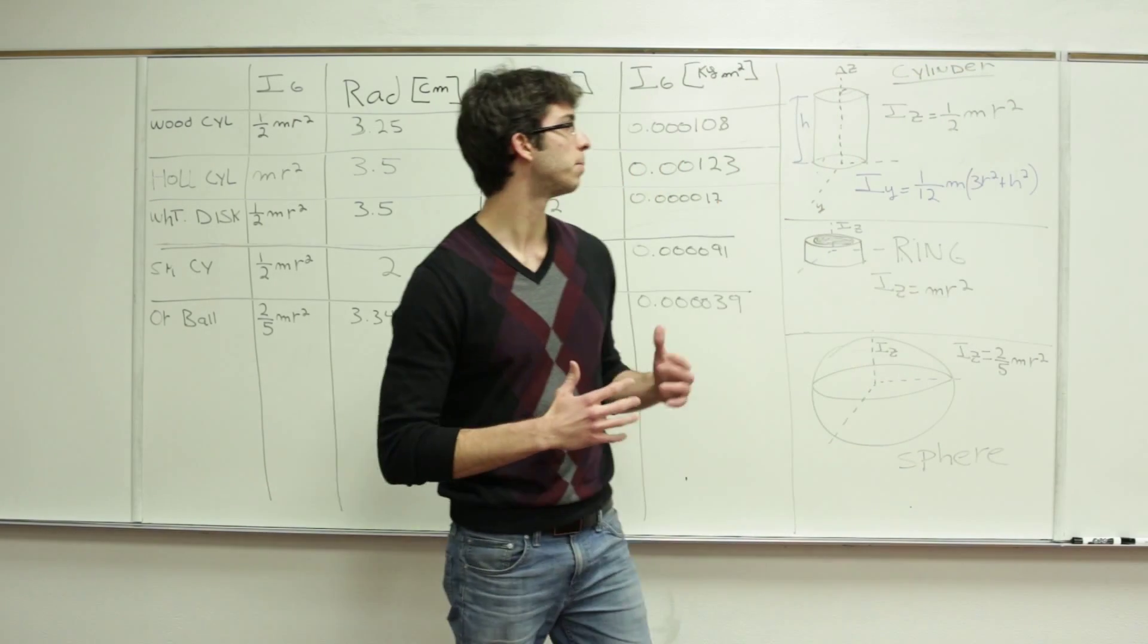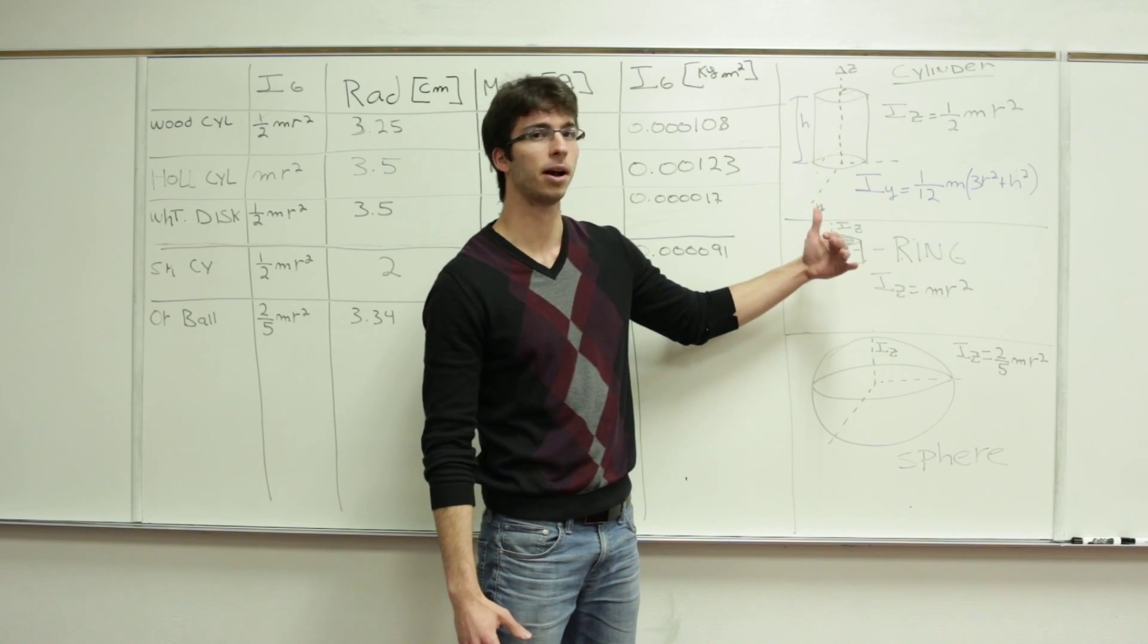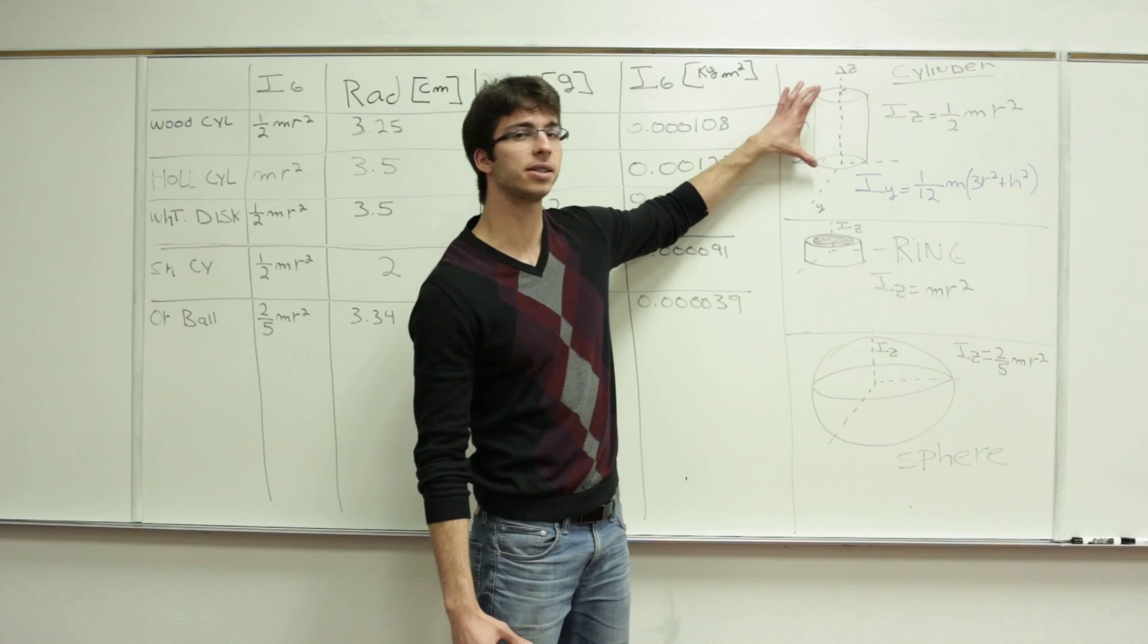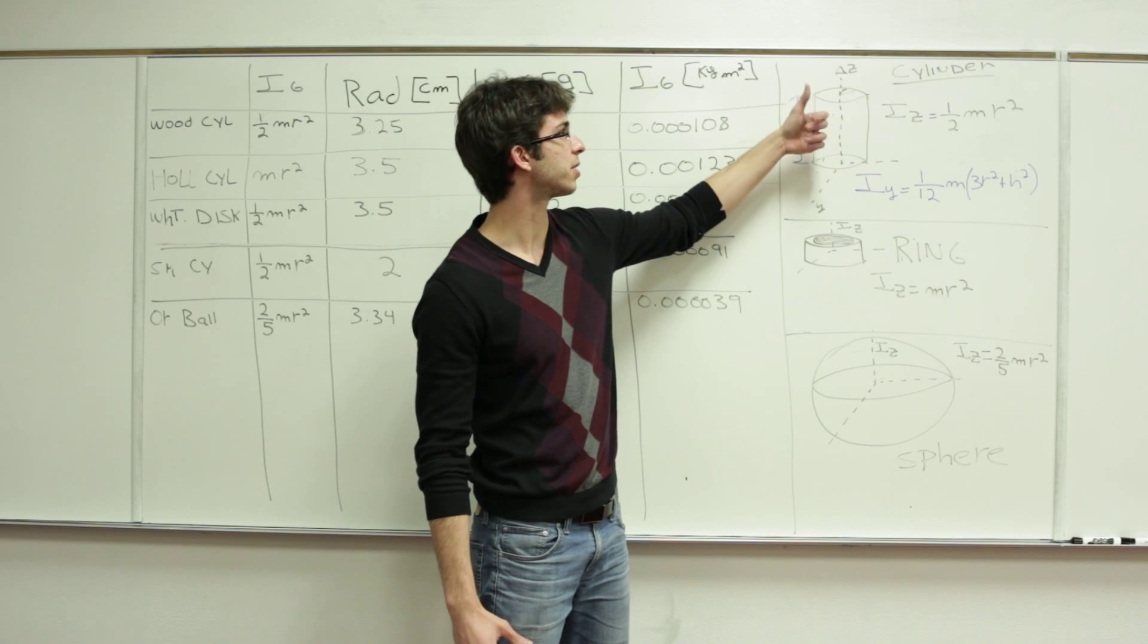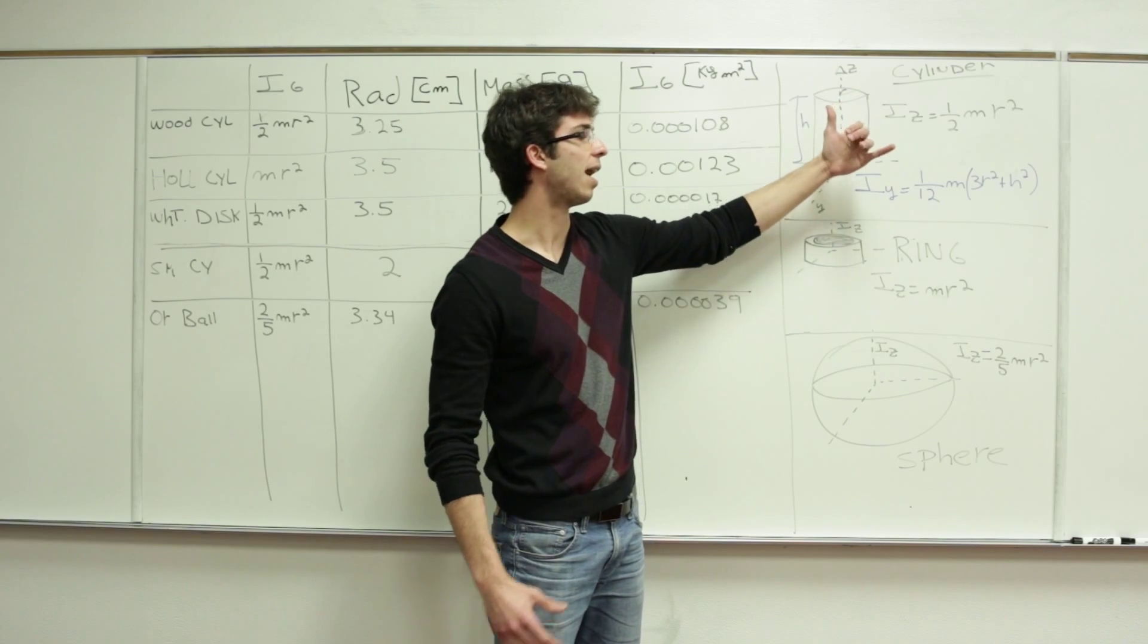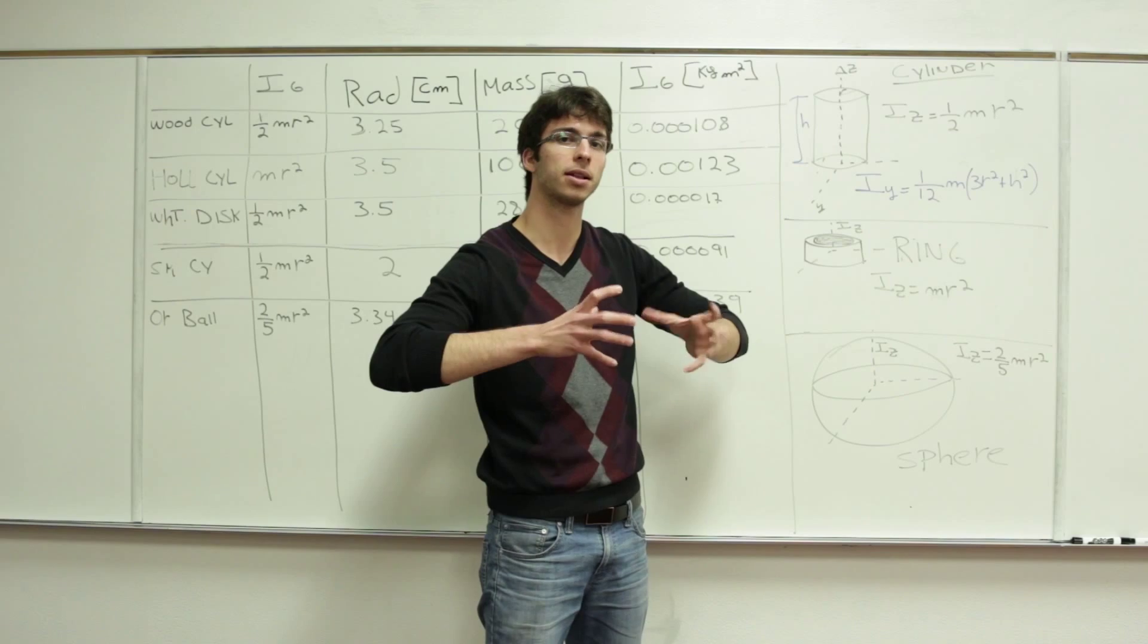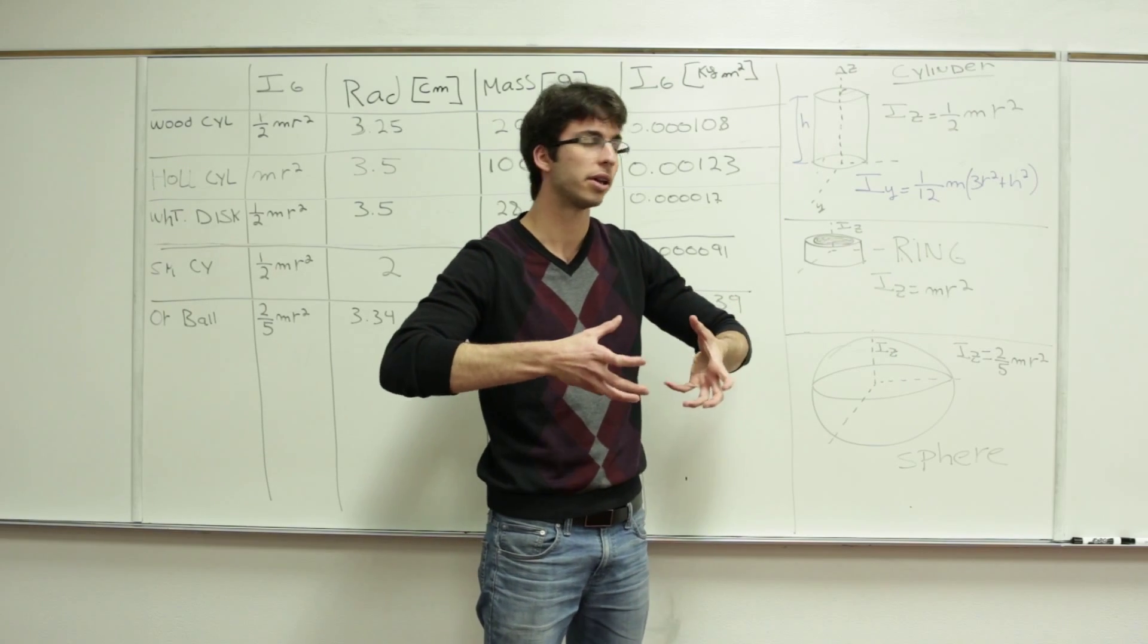And the moment of inertia also varies depending on the axis that we calculated about. So if we have a cylinder and we calculate the moment of inertia on the z-axis, it will give us a relatively small value because a cylinder is a shape that will roll easily.